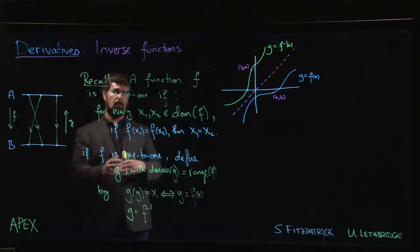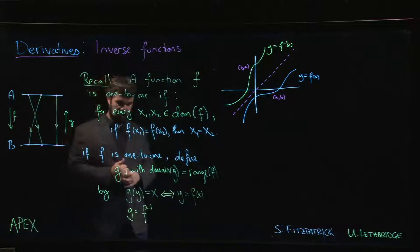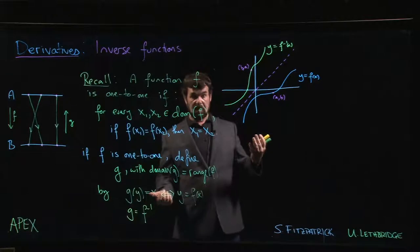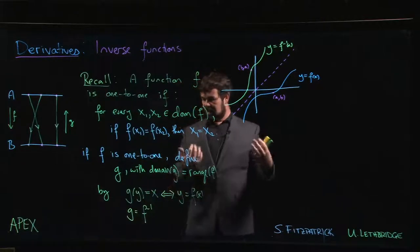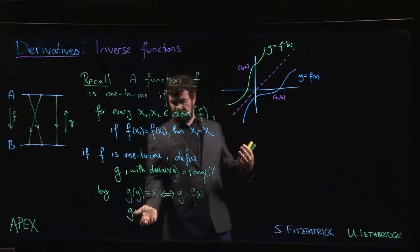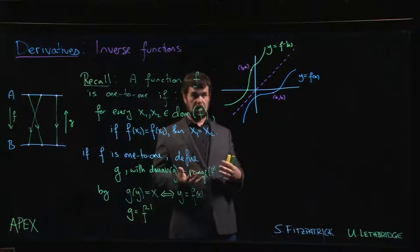We can talk about inverse operations. For example, division as the inverse of multiplication. We know that division is multiplying by the reciprocal. We often denote reciprocals with negative exponents, and so that's where the notation comes from. But of course, this function is not just the reciprocal of the original function. This is something very different from a reciprocal.